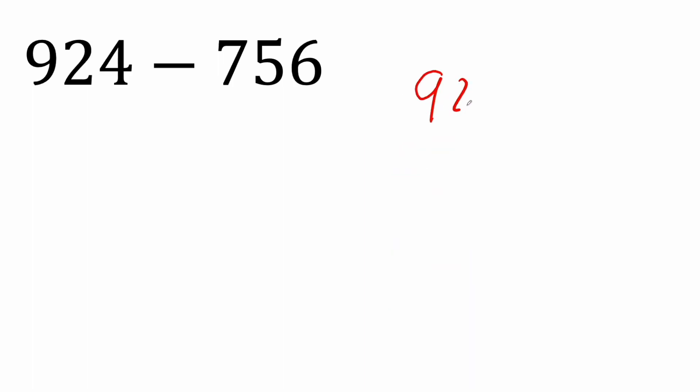Okay, this will be our second problem. 924 minus 756. So 9 minus 7 is 2. 2 minus 5, it's like negative 3. So I'm going to put 3 bar. 4 minus 6, we're going to get like negative 2. So 2 bar. And so we focus on these two pieces. It's like 20 minus 3, so we get 17. And then you still have your 2 bar. And so now you have like 70 minus 2, so you get 68. So we get 168 as our final answer.